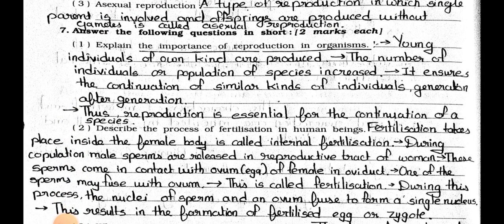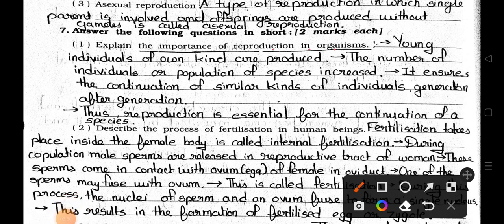Now main 7 — answer the following questions in short, two marks each. Number 1: Explain the importance of reproduction in organisms. Answer: Young individuals of own kind are produced. The number of individuals or population of species increases. It ensures the continuation of similar kinds of individuals generation after generation. Thus reproduction is essential for the continuation of species.